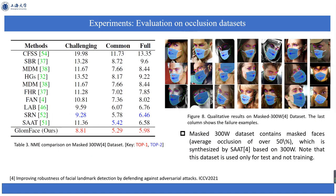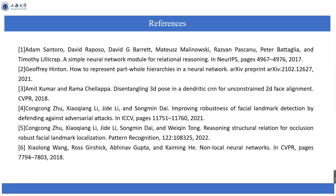On MAST-300W, our GLOMFACE outperforms existing methods by a large margin. Some qualitative results on MAST-300W are illustrated in figure 8, showing that GLOMFACE can efficiently reason facial structure under extreme occlusion. Finally, there are some important references that will be of great help in understanding our work. If you have any questions, please email the authors.